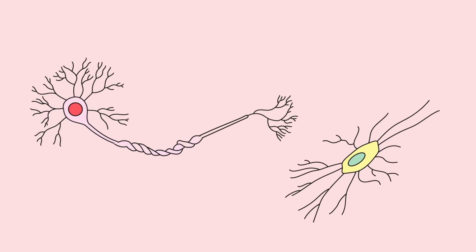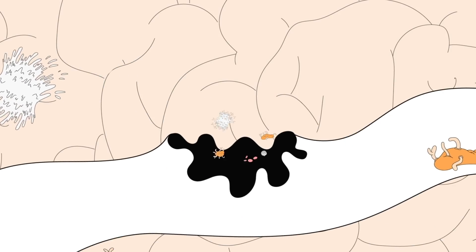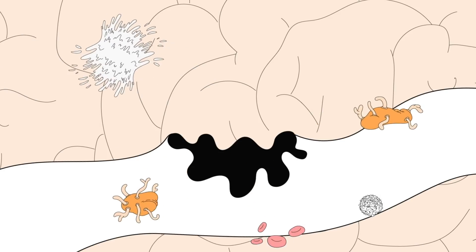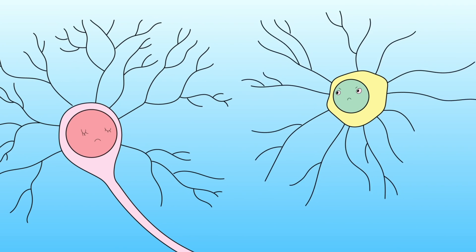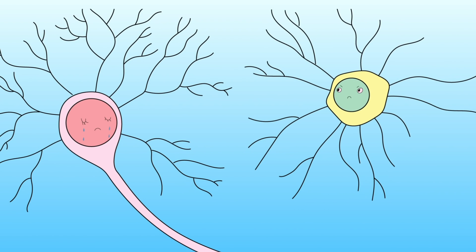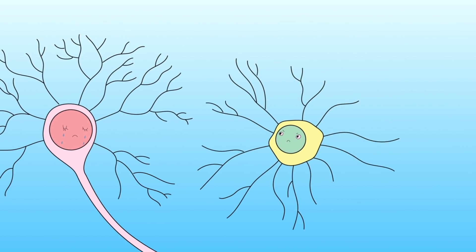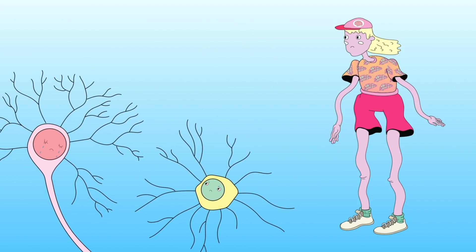When a concussion occurs, some neurons and astrocytes get stretched and twisted. Most importantly, some blood vessels break, allowing molecules that aren't supposed to be in the brain to get inside. These molecules upset neurons and astrocytes. The cells ask for help from the rest of the body by sending out chemical distress signals called biomarkers.